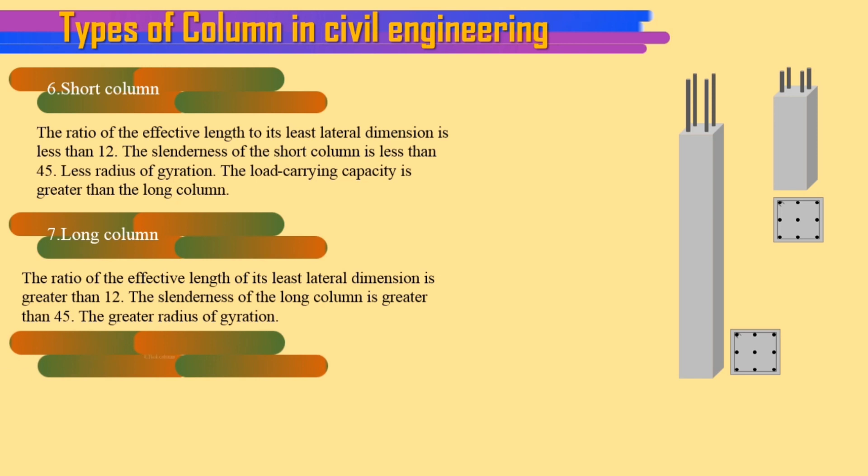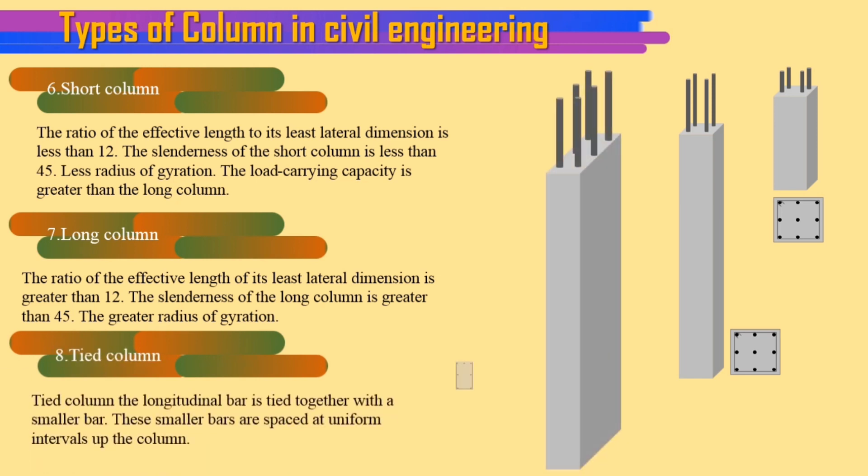8. Tied column. The longitudinal bar is tied together with a smaller bar. These smaller bars are spaced at uniform intervals up the column.